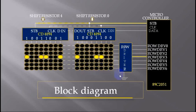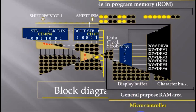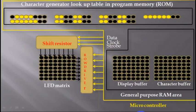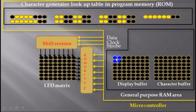Now it's time to dive into the inside of the microcontroller. Here I have shown the internal memories of the microcontroller. There are two types of memories: RAM, or random access memory, and ROM, or read-only memory. I have arranged a RAM matrix identical to the LED matrix, named the display buffer.